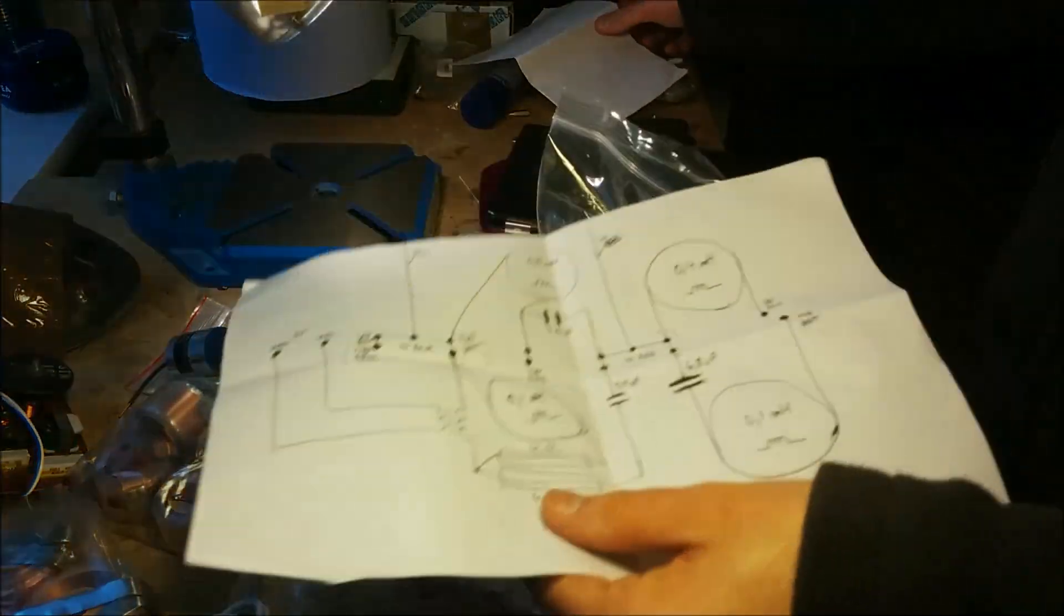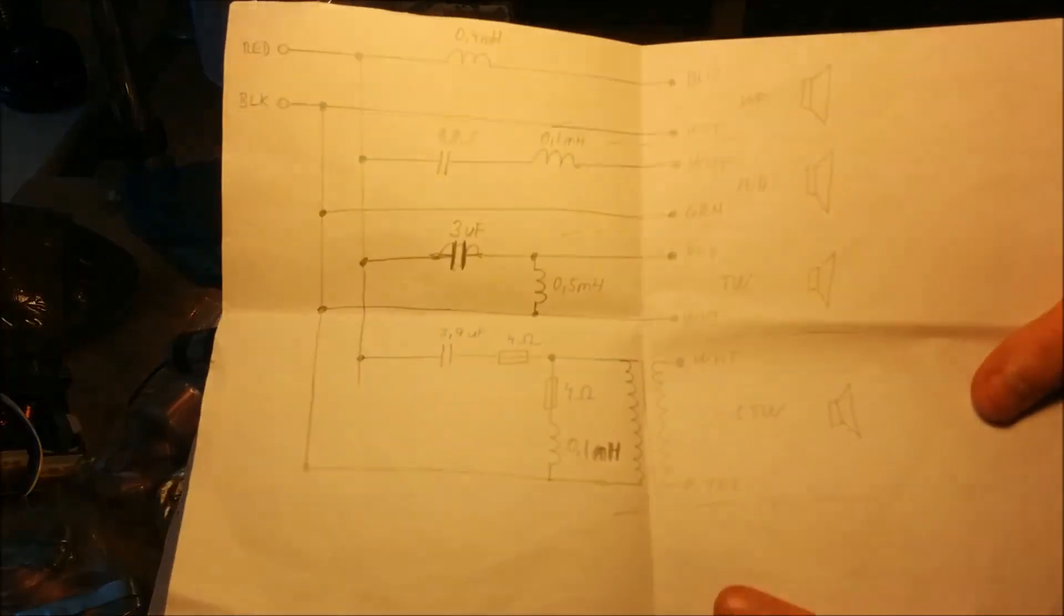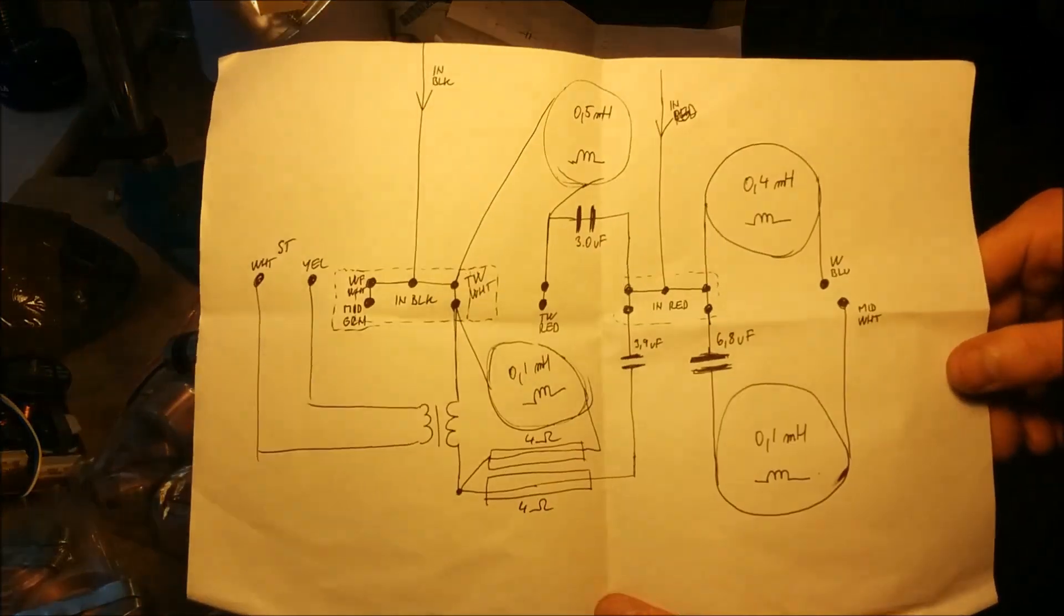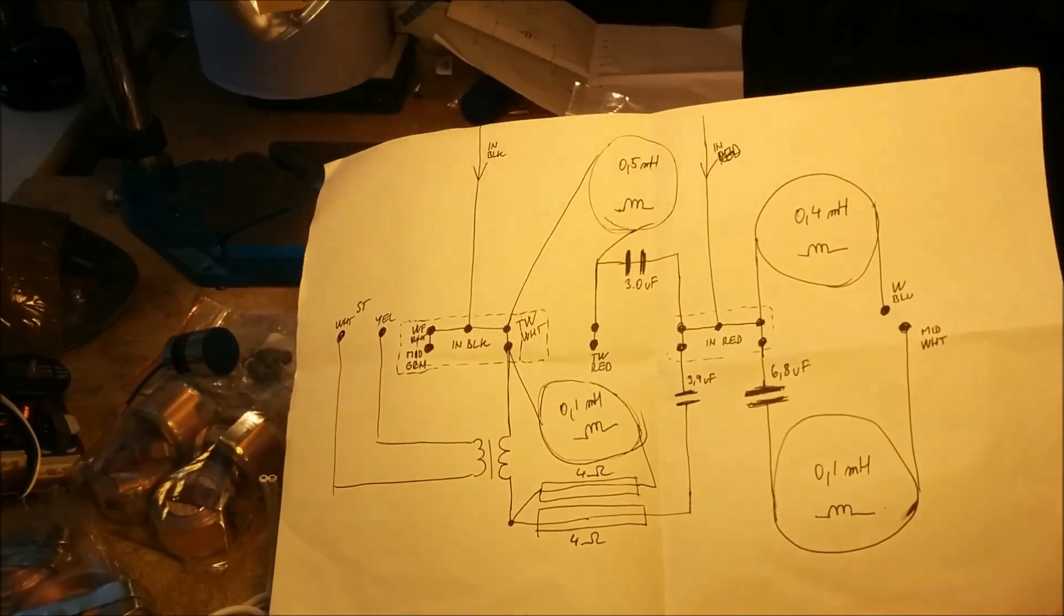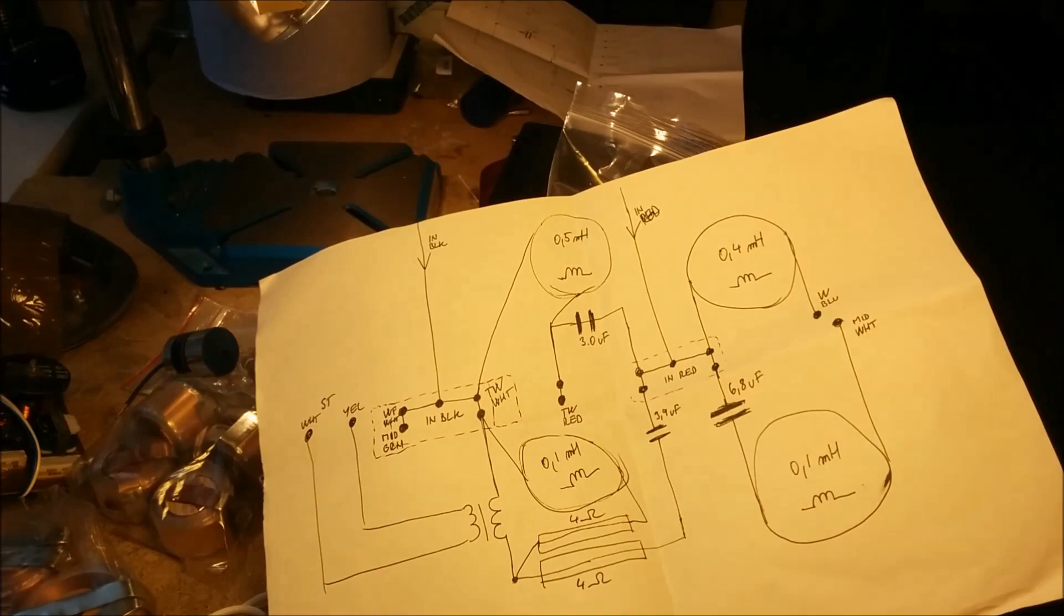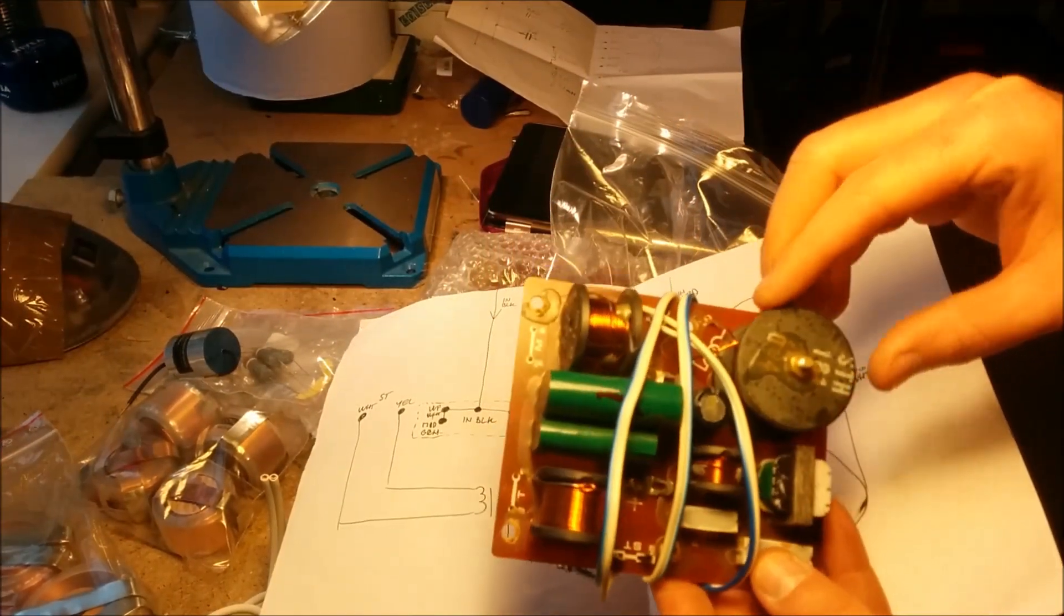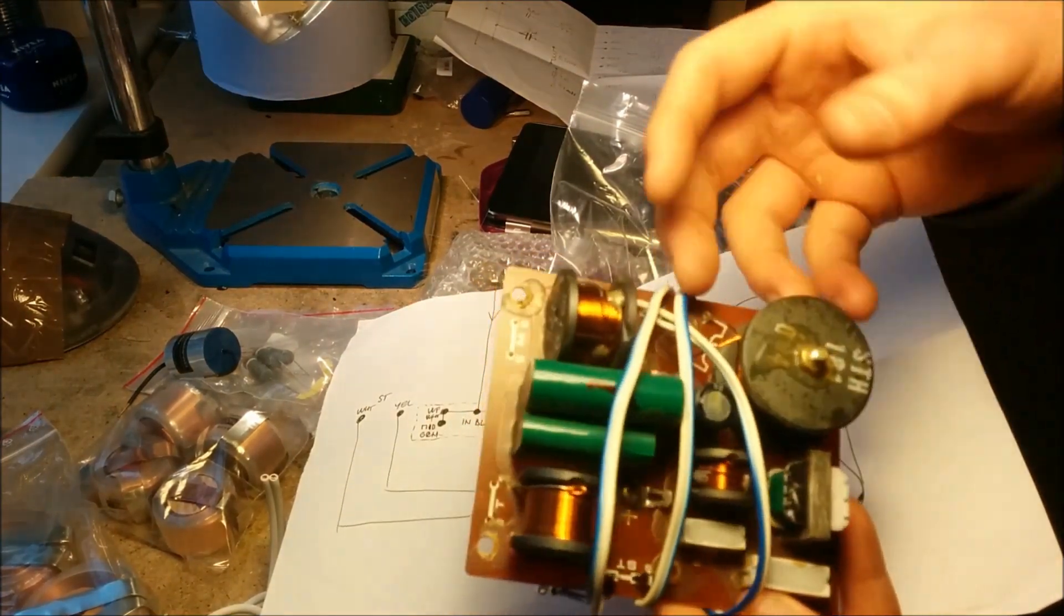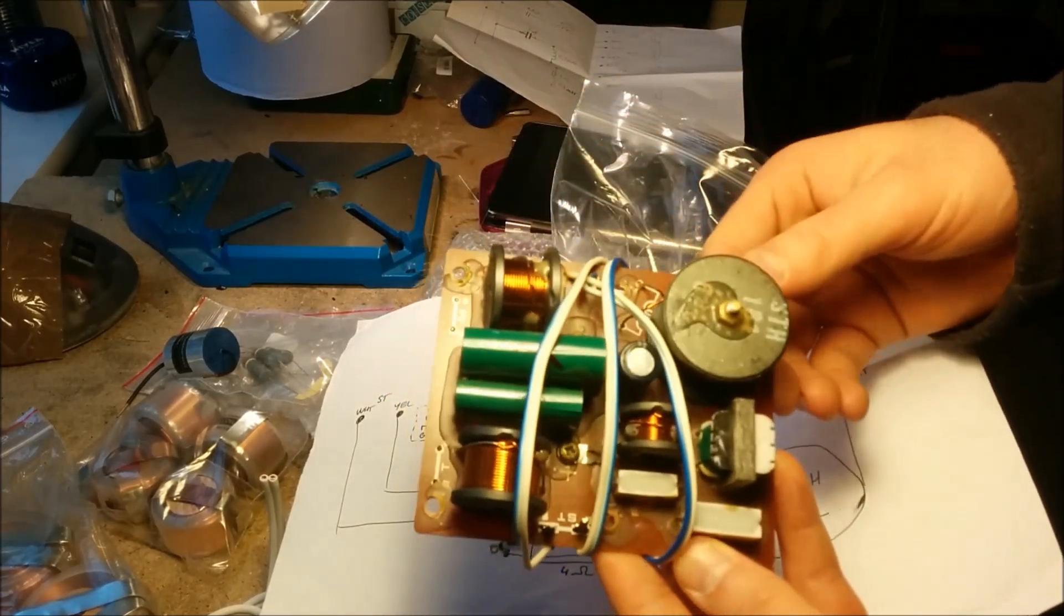What I did here, I drew the crossover and then I made a plan for how I'm going to do the crossover. So now all I have to do is take a piece of wood and try to position it around. What you have to be careful about with crossovers is that you have to position the coils in different directions and different angles so they don't influence each other.